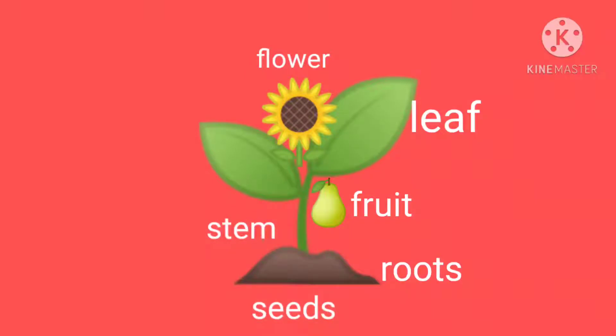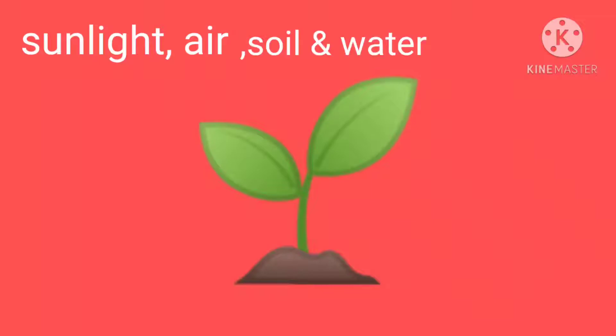you get its root, then stem, leaves, flowers and fruit. To grow a plant properly, it needs sunlight, air, soil and water. I hope children, you have understood how the plant grows.